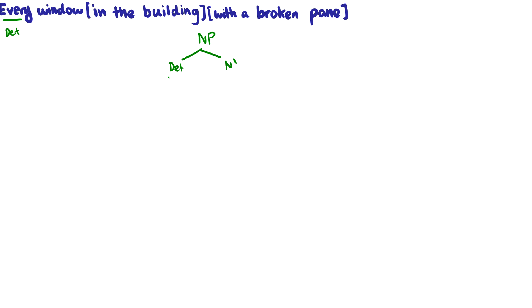So that is 'every.' Now we have two adjuncts. How do we know they're adjuncts? Because we can say 'every window in the building with a broken pane,' or we can say 'every window with a broken pane in the building,' and they mean the same thing. We can flip them around and there are no weird ordering effects. Therefore, they're both adjuncts.